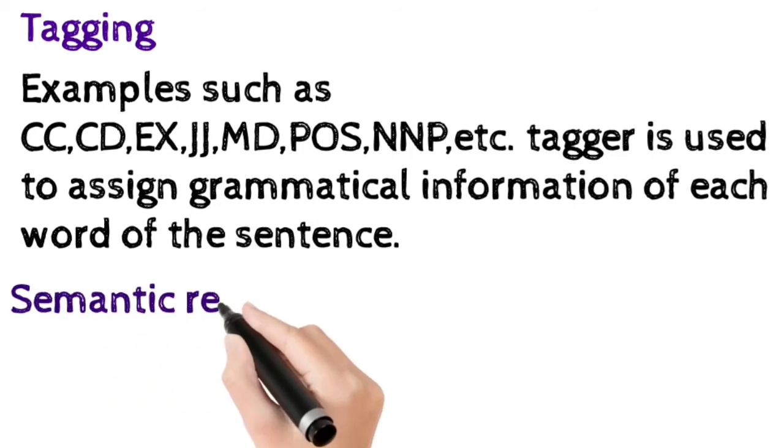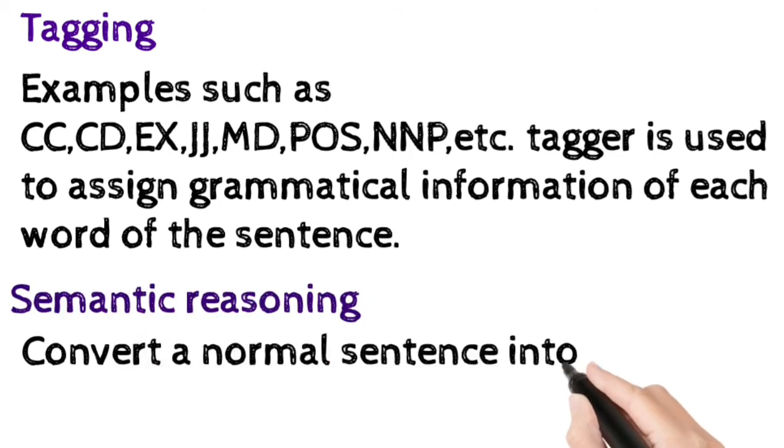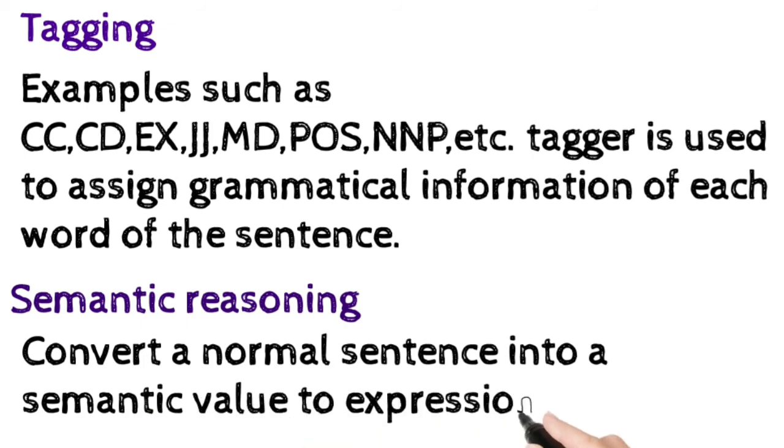Then the last one is semantic reasoning. To convert a normal sentence into a semantic value expressions, we need to use semantic reasoning. Because as humans can understand there is a cat, there is a dog, machine cannot understand it the way we understand. We have to divide a sentence into some form of expressions to make it understand. For that we need to use semantic reasoning.